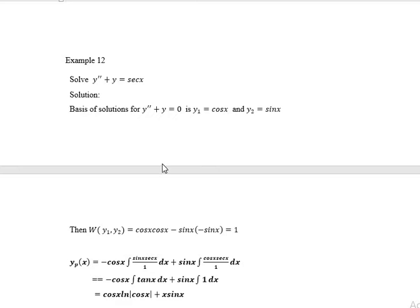Then the complementary solution is c1·y1 + c2·y2. Next, we can calculate the particular solution. For that, first find the Wronskian of y1 and y2. We will get the value of the Wronskian as 1.